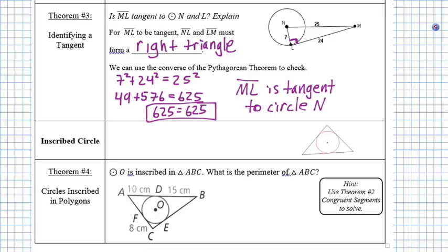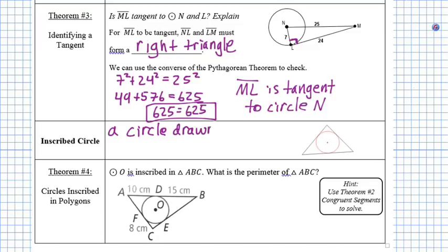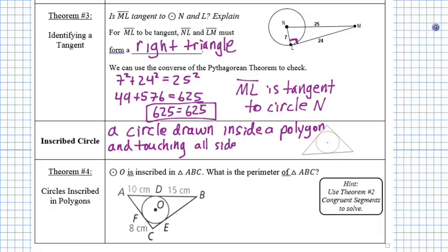Now we have a definition: an inscribed circle. Much like an inscribed angle had its vertex on the edge of a circle, an inscribed circle is a circle which touches the edges of a figure — a circle drawn inside a polygon and touching all sides of that polygon. So your circle, if it's inscribed in a triangle, has to touch that triangle on all three sides.